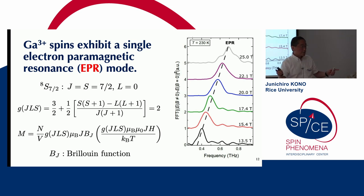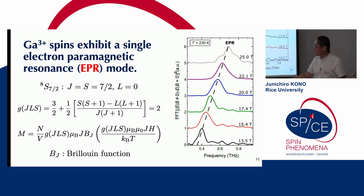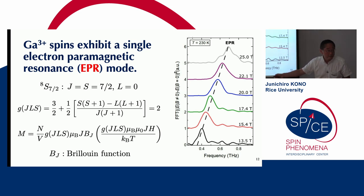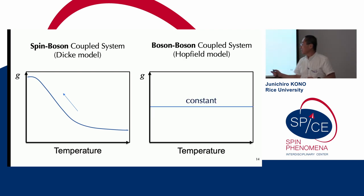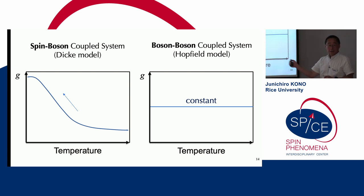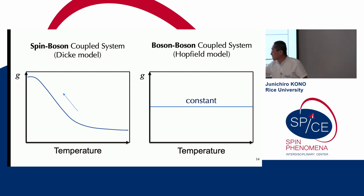The interesting thing is the magnetization of this paramagnetic ensemble obeys Curie's law — it depends on temperature and magnetic field through the Brillouin function, where the Zeeman energy and thermal energy appear explicitly. So the EPR coupling strength G depends on temperature, which is something different from the boson-boson model described by the Hopfield model, like cyclotron resonance and Landau polaritons, where there's no temperature dependence in the coupling constant. In the spin-boson case, it increases with decreasing temperature.